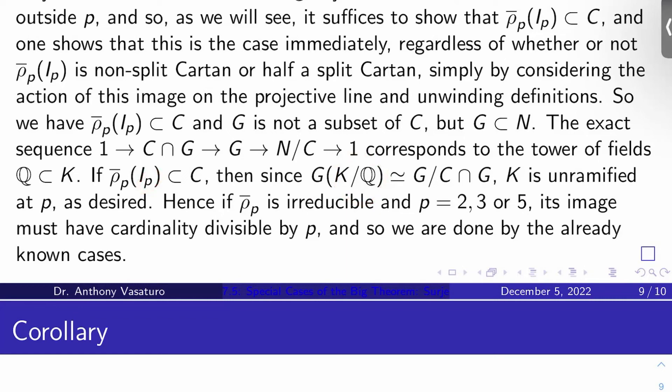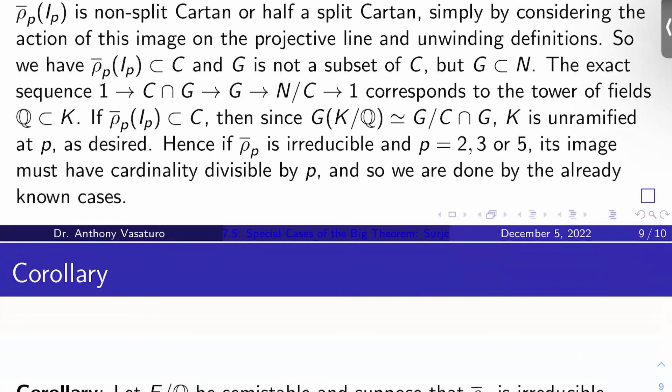But remember, if the image of inertia, when restricted to the Galois group of a number field, is trivial, that's the same thing as that field being field theoretically unramified at the prime in question. So we talked about this back in chapter 1 of my notes. I made a big deal about this. So K is unramified at P, which is what I want. So if rho bar P is irreducible and P is 2, 3, or 5, its image must have cardinality divisible by P, but then we're in one of the known cases dealt with by Serre's paper already, so we're done.